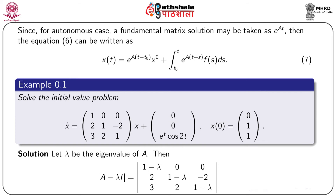For the autonomous case, a fundamental matrix solution can be given as e^{At}, so equation 6 can be written as x(t) = e^{A(t−t₀)}·x₀ + ∫_{t₀}^{t} e^{A(t−s)}·f(s) ds, given by equation 7.